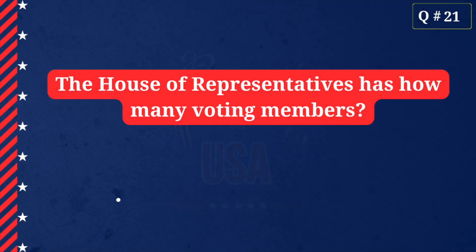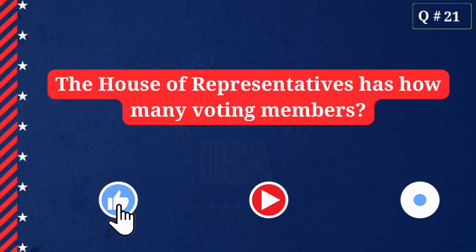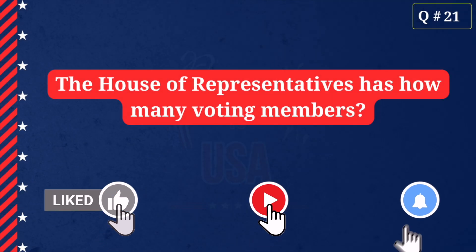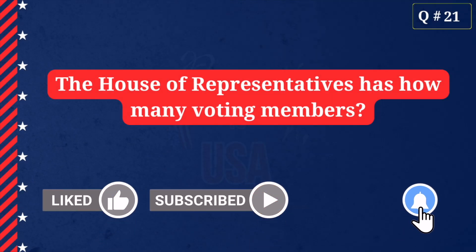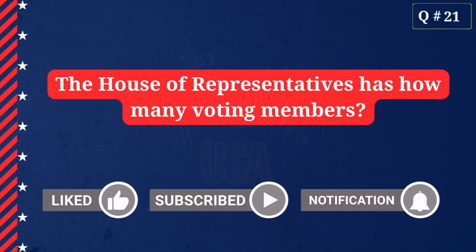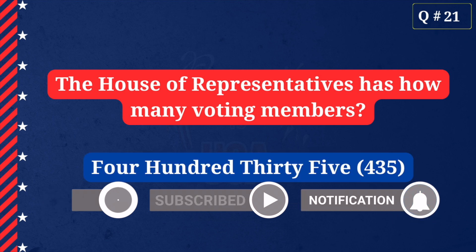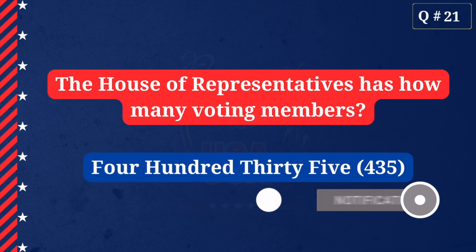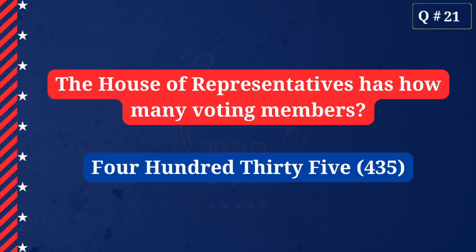The House of Representatives has how many voting members? Four hundred thirty-five.